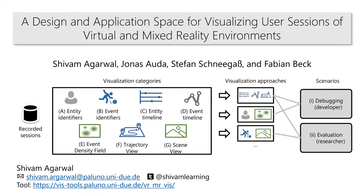To conclude, we proposed a design and application space consisting of seven categories. We discussed two application scenarios where these categories can be used to visualize sessions of virtual and mixed reality environments. Through one application example, we showed how the categories can be combined and tailored for a specific remote collaboration mixed reality application. For more details and another application example, please refer to the paper. Thank you.